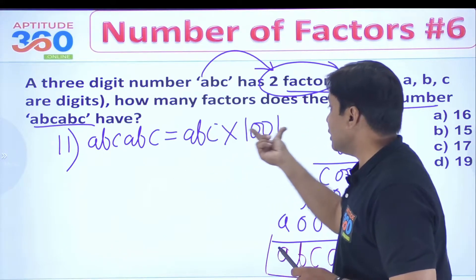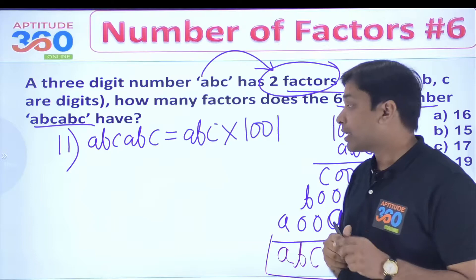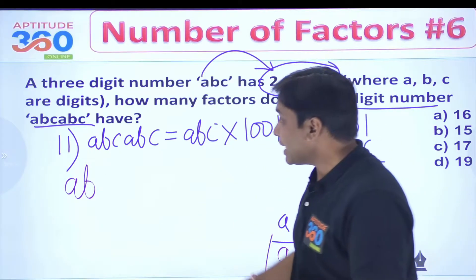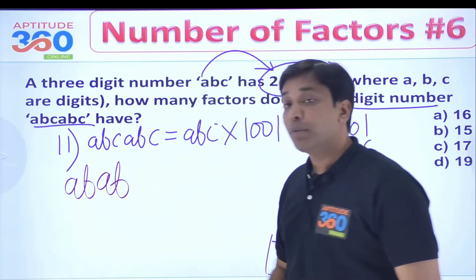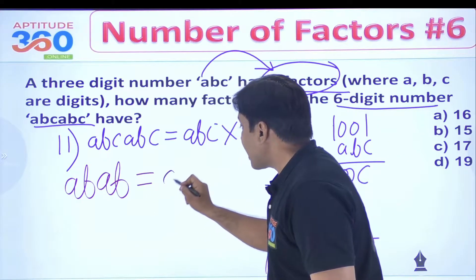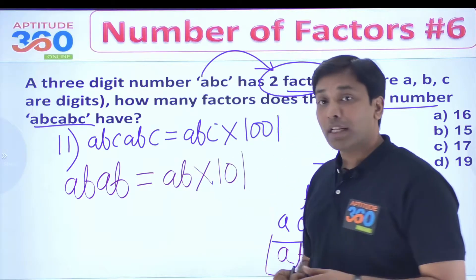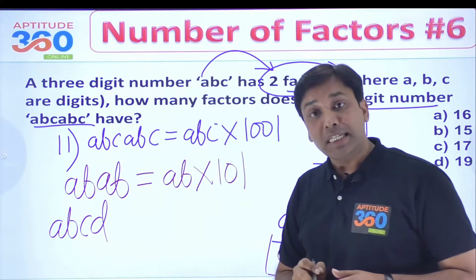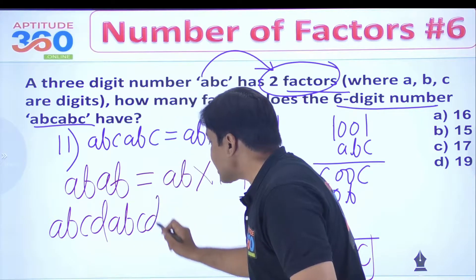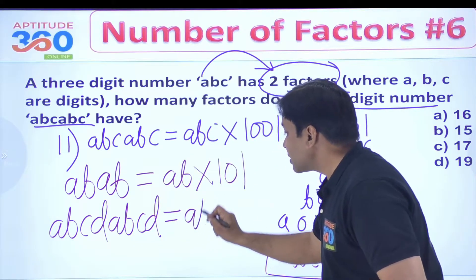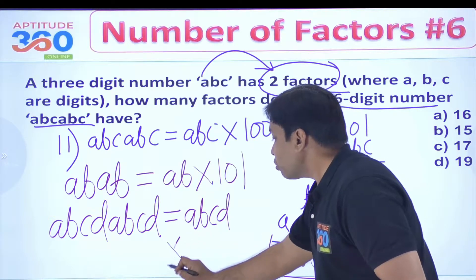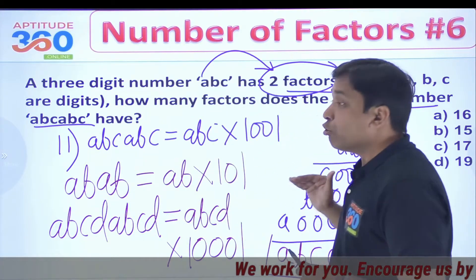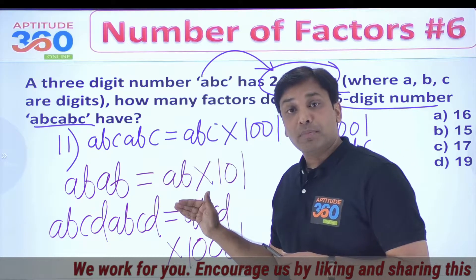So if you are given ABC and need to write a six-digit number, write it as ABC × 1001. Similarly, if you had a two-digit number AB and needed to write a four-digit number ABAB, you could do this as AB × 1010 + 1, i.e., AB × 101. And if they gave you a four-digit number ABCD and you needed to write an eight-digit number ABCDABCD, you could write that as ABCD × 10001. This is something you have to figure out on your own — that is what makes these problems slightly different.